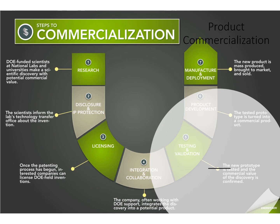There are seven steps to commercialize your product. First is doing research — DOE-funded scientists at national labs and universities make scientific discoveries with potential commercial value. Second is disclosure and IP protection — the scientist informs the lab's technology transfer office about the invention. Third is licensing — once the patenting process has begun, interested companies can license DOE-held inventions.